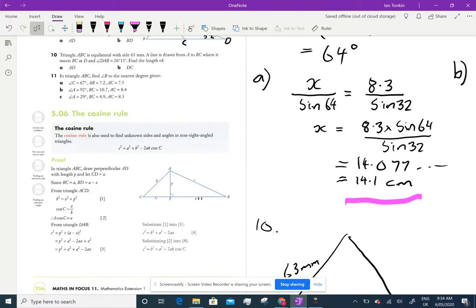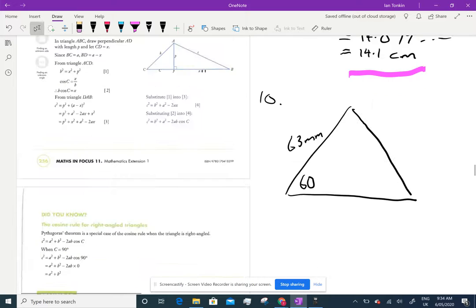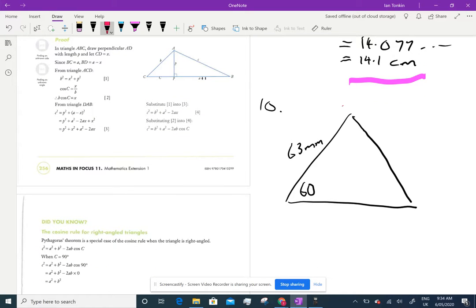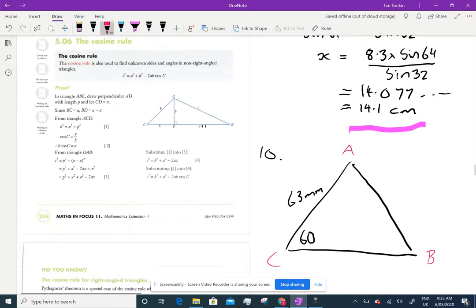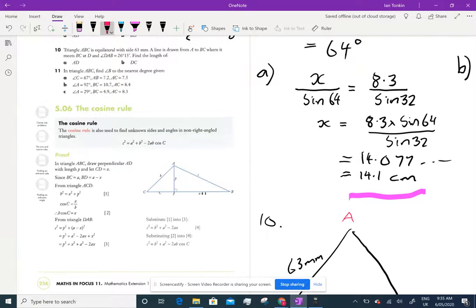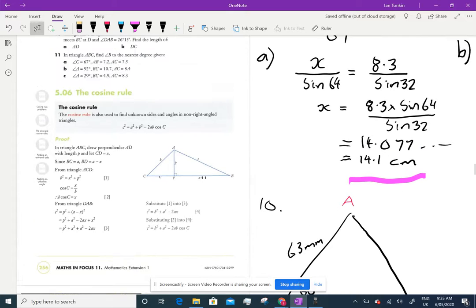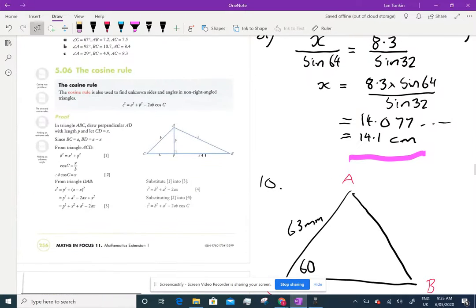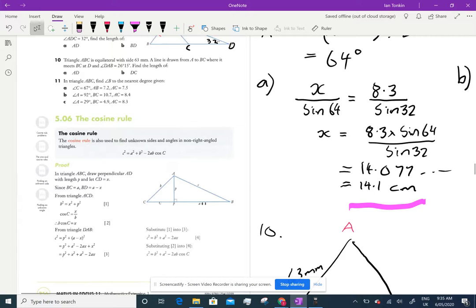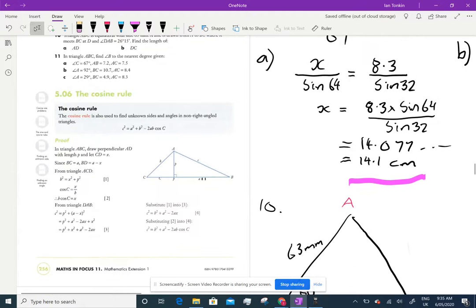What's the side length? 6.63 millimeters. Wait, 63 millimeters. A line is drawn from A to BC. I'll label it: A at the top, B, C. It doesn't matter how you label it. From A to BC where it meets BC at D, and angle DAB is 26 degrees and 15 minutes.